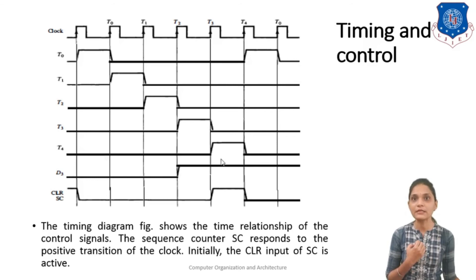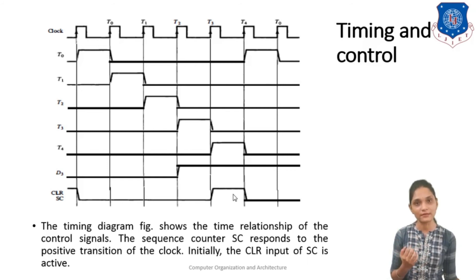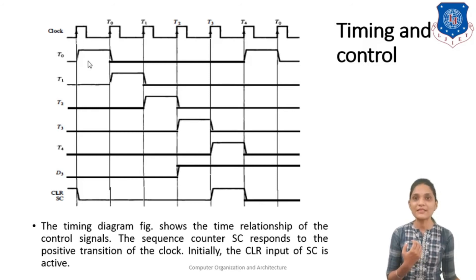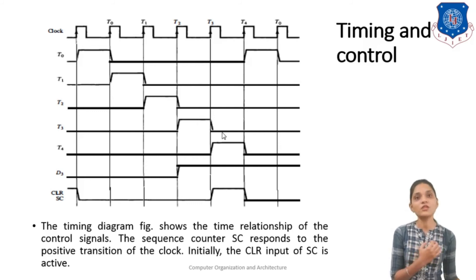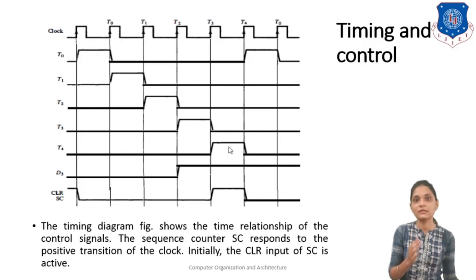When the D3 signal is generated and when your T4 timing signal is generated, the condition D3·T4 is fulfilled — both are 1. So at that time your clear signal is generated for your sequence counter, meaning the sequence counter is cleared. At the first clock you have timing signal T0, at the second clock T1, at the third clock T2, at the fourth clock T3, and so on. This can go up to T15. If the SC is not cleared it continues, and depending on the condition used you can clear your sequence counter, indicating that instruction execution is completed and you can start the next instruction.